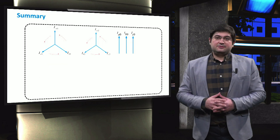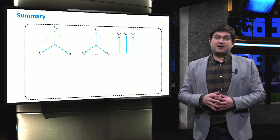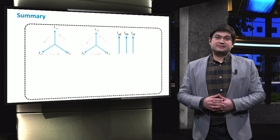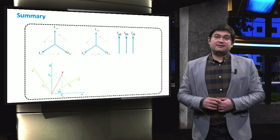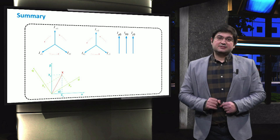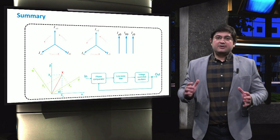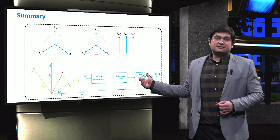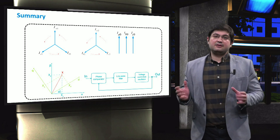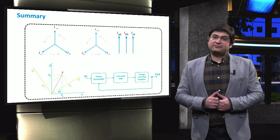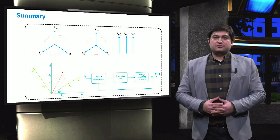In this video, we first addressed the three sequences of unbalanced microgrids, and then introduced in more detail the alpha-beta transformation for a three-phase system. We also introduced the phase-locked loop, which is an important block of all electrically interfaced distributed generation units that we will use in future videos.